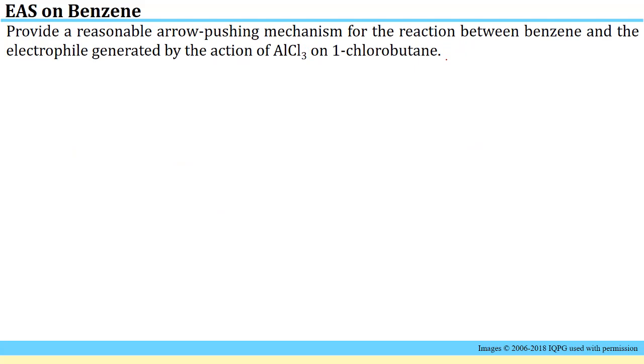Now that we've taken a look at some of the ways that one can generate carbocations to be used in a Friedel-Crafts alkylation reaction, we have this problem about providing a reasonable arrow pushing mechanism for the reaction between benzene and the electrophile that's generated by the action of aluminum trichloride and 1-chlorobutane. If you take 1-chlorobutane, the chloride will be abstracted by the aluminum trichloride and that leaves you with this primary carbocation. The primary carbocation is not very stable, so if you identify a more substituted site adjacent to it you should expect a carbocation rearrangement to occur. That will occur prior to any reaction between the electrophile and the benzene. Here we illustrate the 1,2-hydride shift and that generates a secondary carbocation.